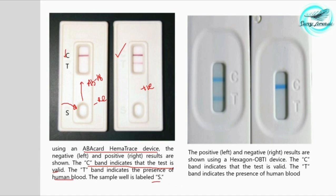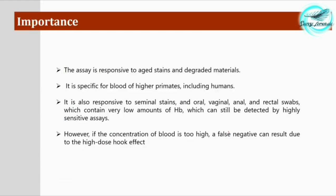This is another kit — the Hexagon Opti device. Here both the control zone and test zone give positive results when a sample is present. With no sample, only the control zone shows a result. This is very clear.